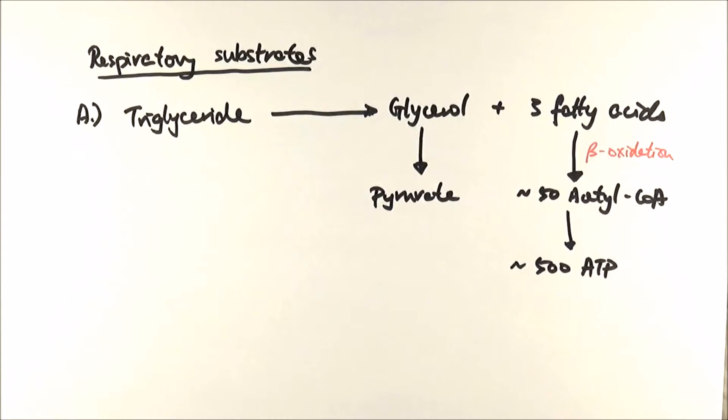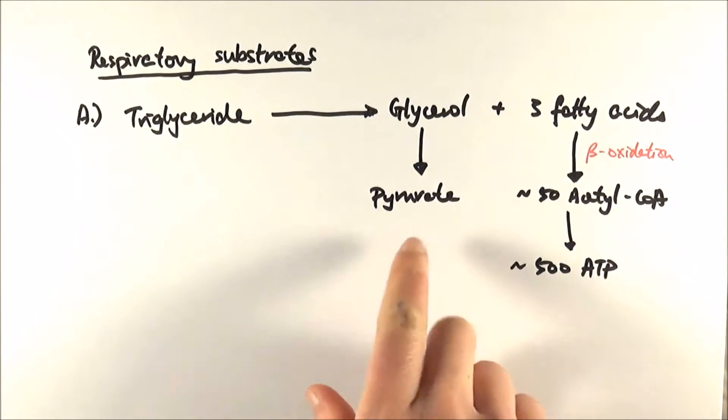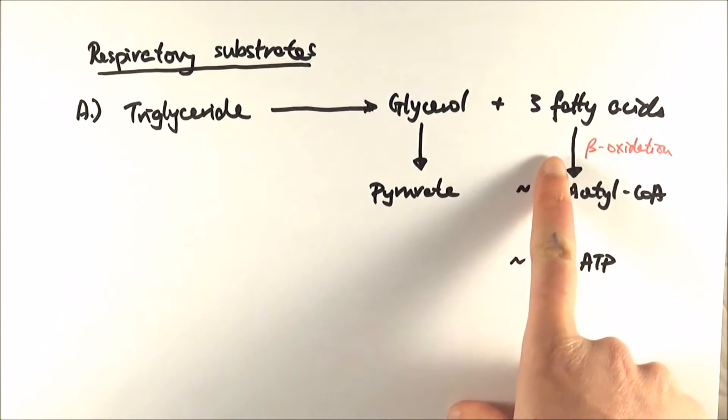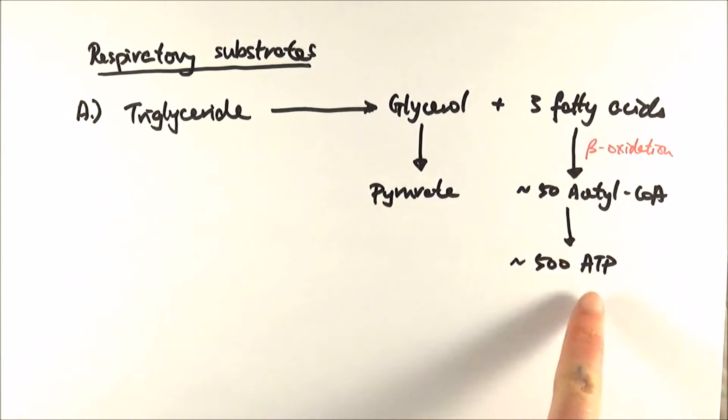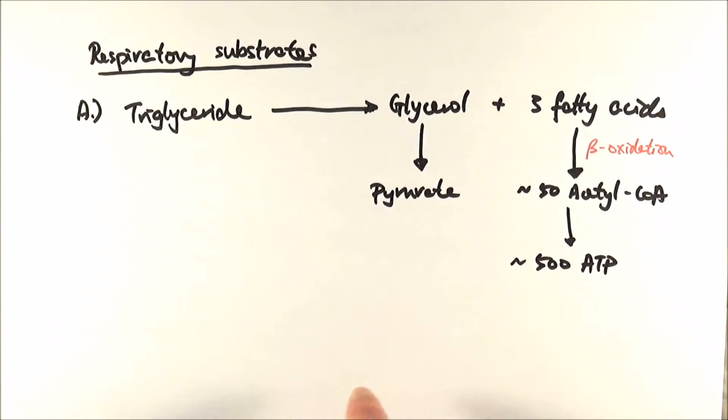Keeping in mind, in our original glucose pathway one glucose molecule makes two pyruvate and each pyruvate goes on to make 38 ATP molecules, whereas here from three fatty acids you can make at least 500 ATP. That's why we say fat actually has a very high energy content. Each of these fatty acids contains at least 18 carbons, meaning they've got lots of carbon-hydrogen bonds, and each of these bonds releases a lot of energy. That's why we can make so many acetyl groups and hence so many ATP molecules.